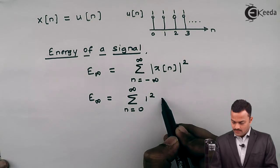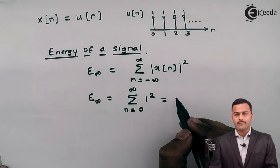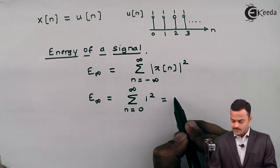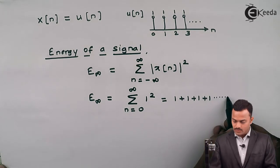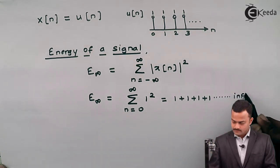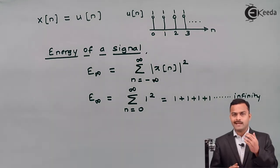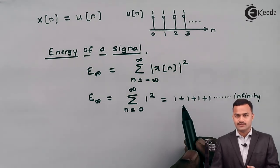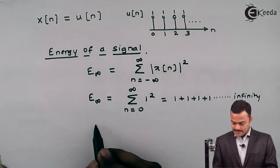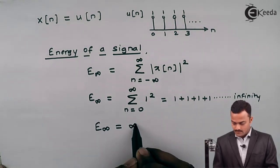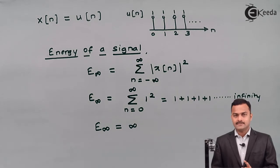For every value of n, x of n is 1, so we are summing 1 squared which equals 1. This gives us 1 plus 1 plus 1 plus 1, continuing up to infinity. Every addition keeps increasing: 1 becomes 2, becomes 3, going up to infinity. So E infinity equals infinity, which implies the signal is not an energy signal.